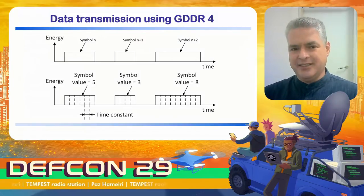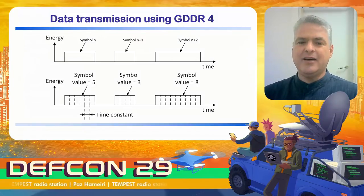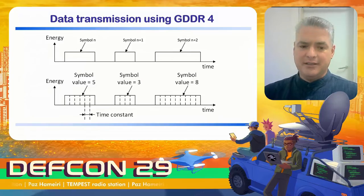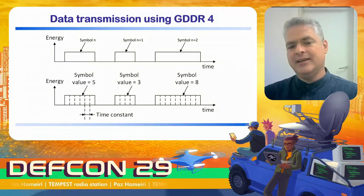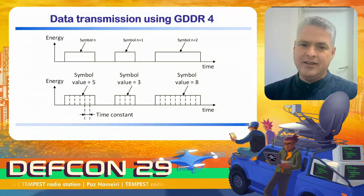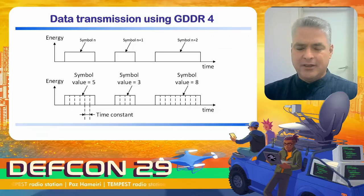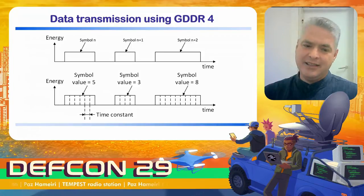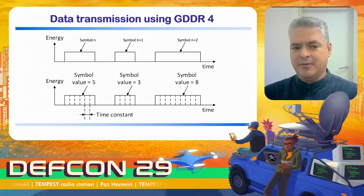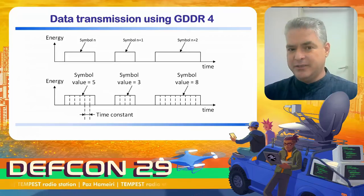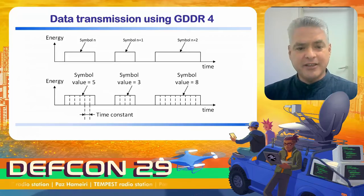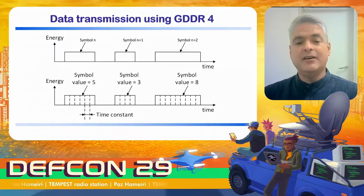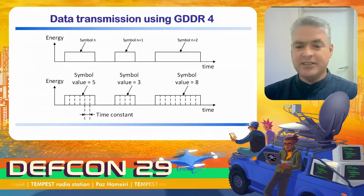Here you can see this graphically. The upper graph shows energy being emitted for three different symbols. The lower graph shows the relationship between the formula and the time it takes to transmit each symbol. For example, symbol value five: add one to get six, multiply by the time constant — that is the symbol size. You can similarly see it for symbol values three and eight.